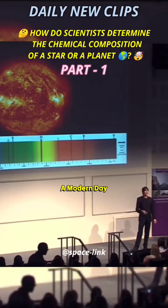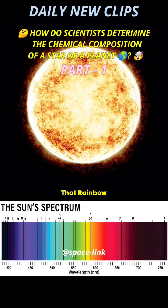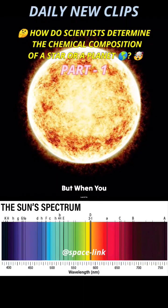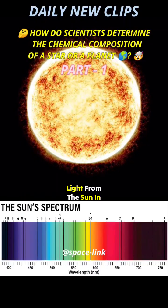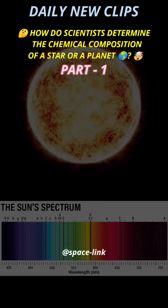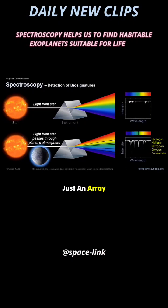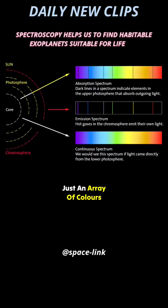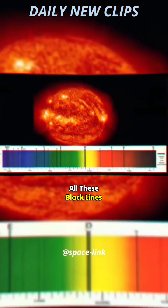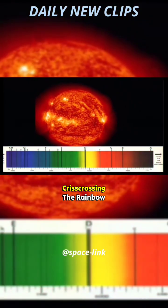This is a picture, a modern-day picture of that rainbow. But when you look at the light from the sun in a laboratory, and you're very careful and you put it through a very precise prism, then you see that it's not just an array of colours — it has dark lines in it. All these black lines crisscrossing the rainbow.